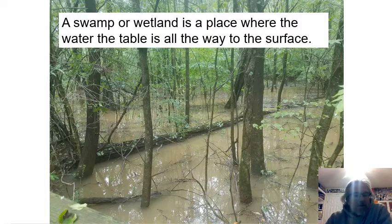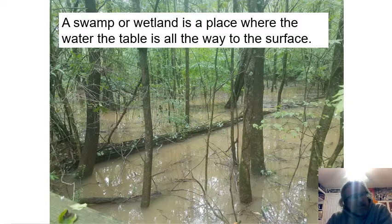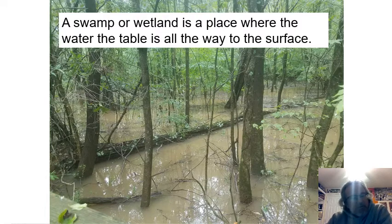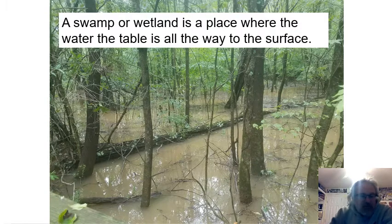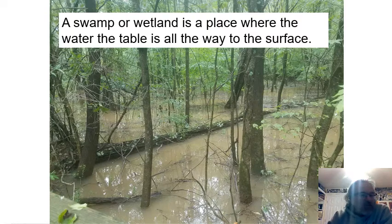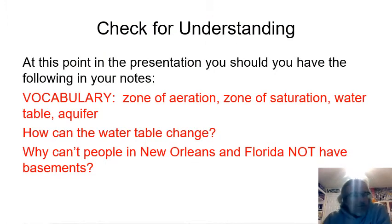Around here, places like the Big Creek Greenway — a swamp or wetland — is a place where the water table is almost all the way to the surface. When it rains really hard the water table comes above the surface and you get flooding. After it stops raining the water table goes back down, but it's still going to be really close to the surface.